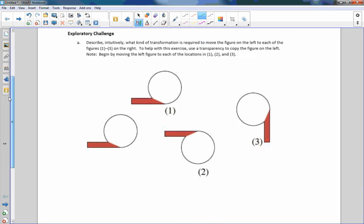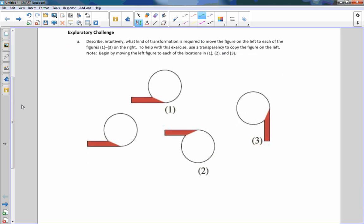Classwork exploratory challenge. A. Describe intuitively what kind of transformation is required to move the figure on the left to each of the figures one through three on the right. To help with this exercise, use a transparency to copy the figure on the left. Note, begin by moving the left figure to each location in one, two, and three.